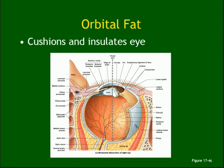The orbital fat is there to protect the eye — it acts as a cushion. Anytime you see fat around any organ, know it is there to keep it in place, fix it in place, and protect it. The fat absorbs shock. You will see this around the kidney, around the heart — all important organs are surrounded by fat from outside.